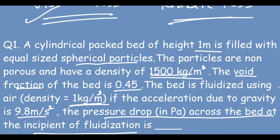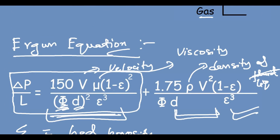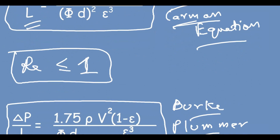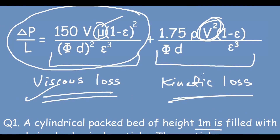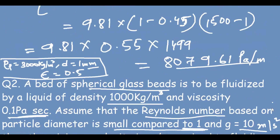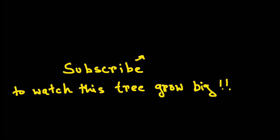In conclusion: the Ergun equation is made up of two parts — the Kozeny-Karman part and the Burke-Plummer part. During fluidization, the pressure drop is calculated using ΔP/L = g(1−ε)(ρp − ρ). The Burke-Plummer part represents kinetic energy loss, and the Kozeny-Karman part gives viscous loss. We solved two problems. Thank you.